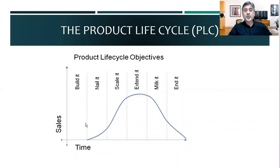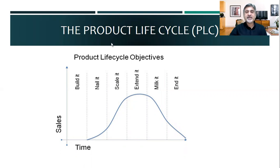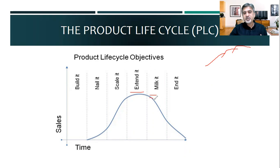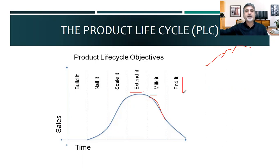What do you do in each stage? First: build it — this is your R&D. Then nail it — introduction. Then scale it — growth. Then extend it — you try to extend the maturity stage as much as possible by giving new features, new designs, and new life to the product. Then milk it — you just want to take out maximum what you can because you know it is going to end. Then end it — the product is taken out from the market. Build it, nail it, scale it, extend it, milk it, and end it.